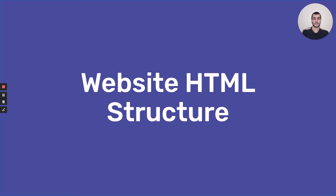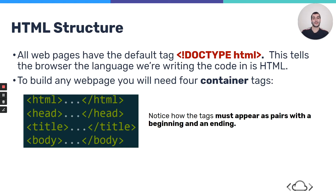Now let's visit the HTML structure — this is key for how we display content through HTML code. All webpages have the default tag: left angle bracket, exclamation point, doctype, HTML, right angle bracket. This tag is special. At the beginning of all of our HTML code, we'll always include this single tag. It tells the browser that the language we're writing code in is HTML. Later on, when we learn CSS, this tag can help us know whether we're writing in HTML or CSS.